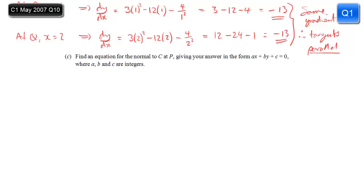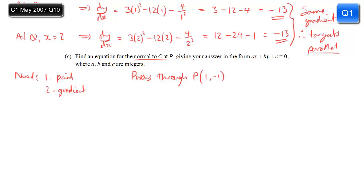Part C: find the equation of the normal to the curve C at point P. For any line, we need two things: a point that lies on the line, and the gradient. The normal passes through P, so it passes through (1, −1). For the gradient, the normal is perpendicular to the curve C, so its gradient is the negative reciprocal of the gradient of the tangent — that is, minus 1 over minus 13, which gives 1 thirteenth.